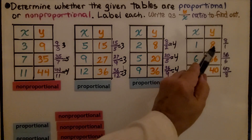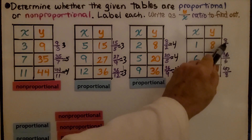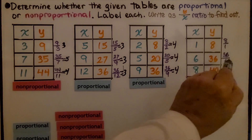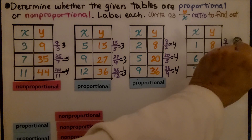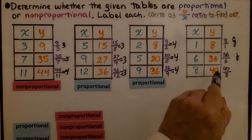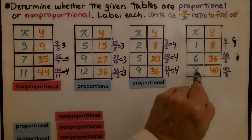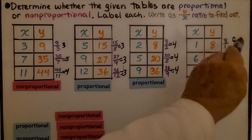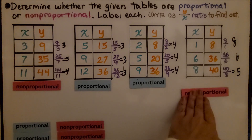Here we've got 8 over 1, which equals 8. We have 36 over 6, which equals 6. This one's 8, that one's 6. Then we have 40 over 8, which equals 5. So we don't have a constant rate of change. That's non-proportional.